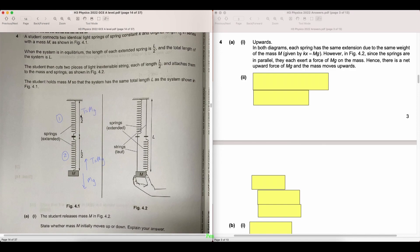Now we know that when the spring is stretched to length L over 2, the tension in the spring is mass times G. In scenario 2, we see that the spring is also extended to the length of L over 2.